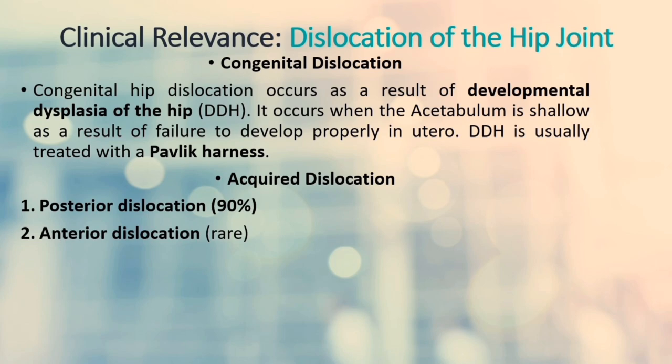Posterior dislocation accounts for 90% of cases. The femoral head is forced posteriorly, tearing through the inferior and posterior part of the joint capsule where it is weakest. The affected limb becomes shortened and medially rotated. The sciatic nerve, which runs posteriorly to the hip joint, is at risk of injury in 10-20% of cases. Anterior dislocation is rare and occurs as a consequence of traumatic extension, abduction and lateral rotation, displacing the femoral head anteriorly and inferiorly in relation to the acetabulum.